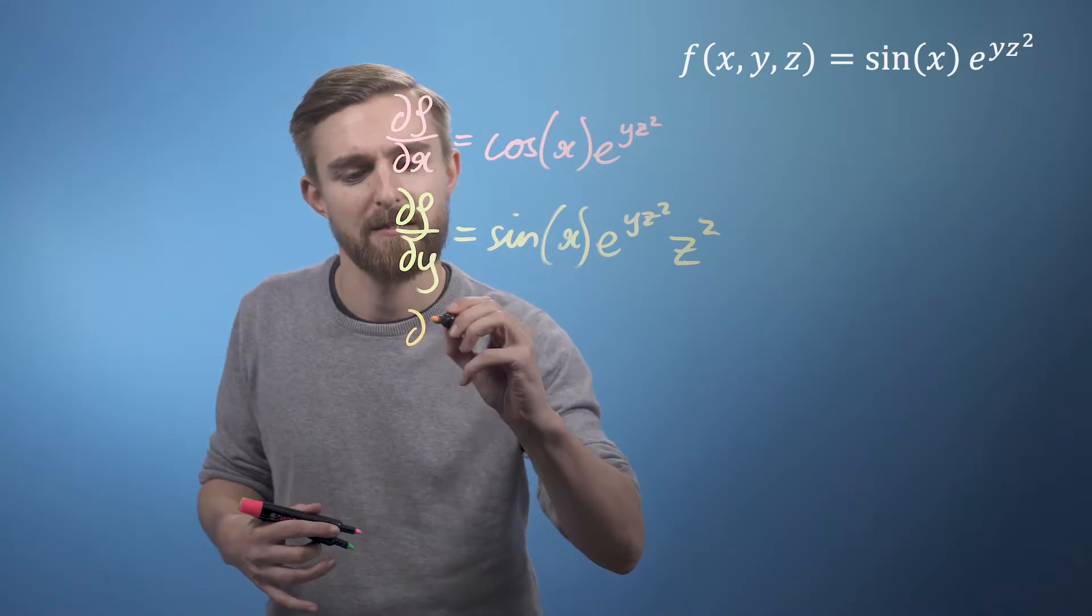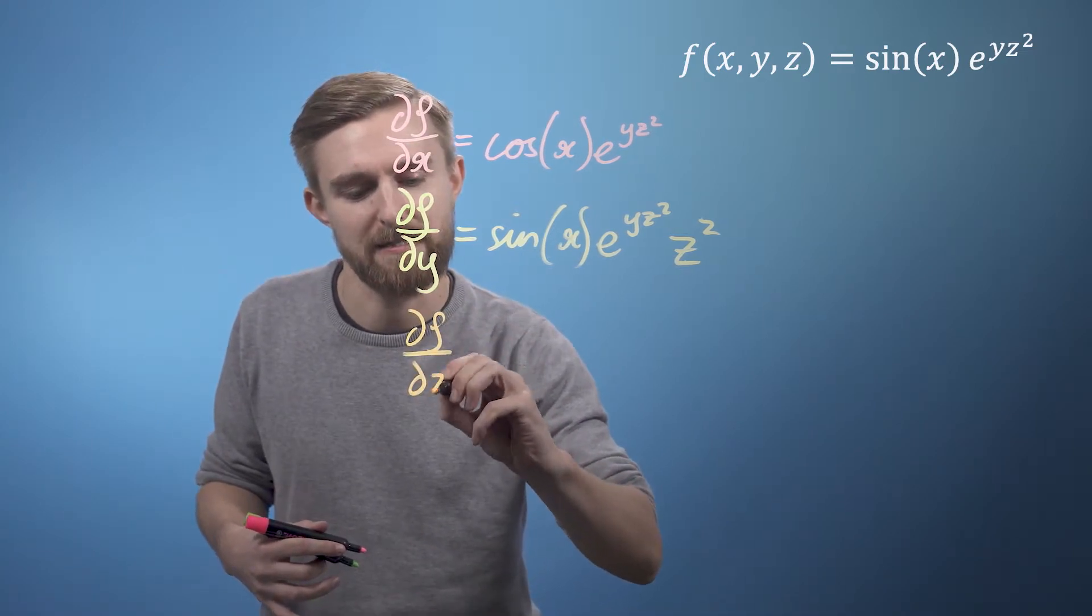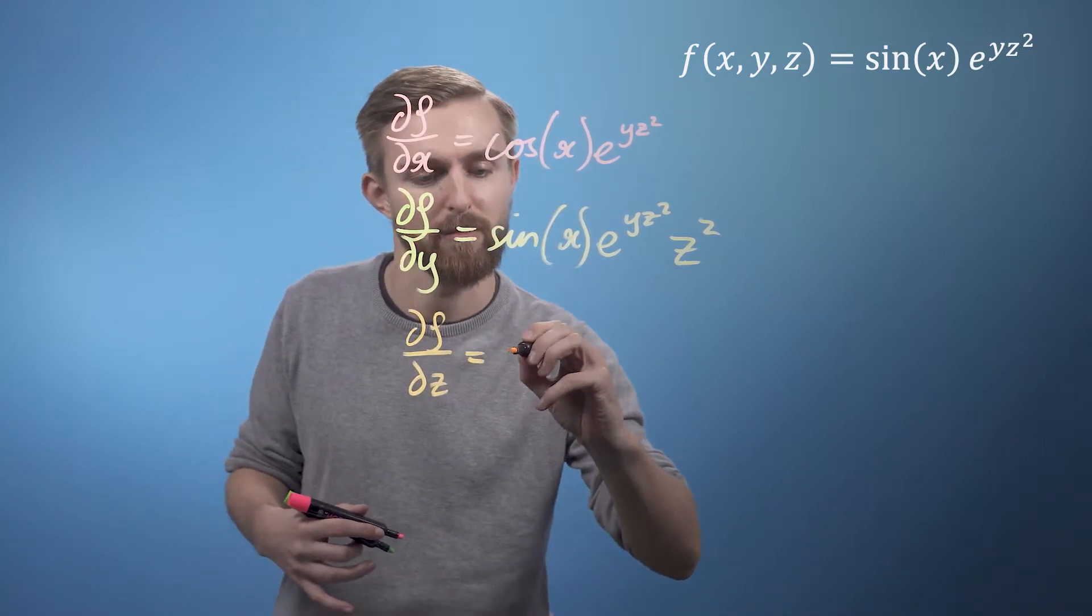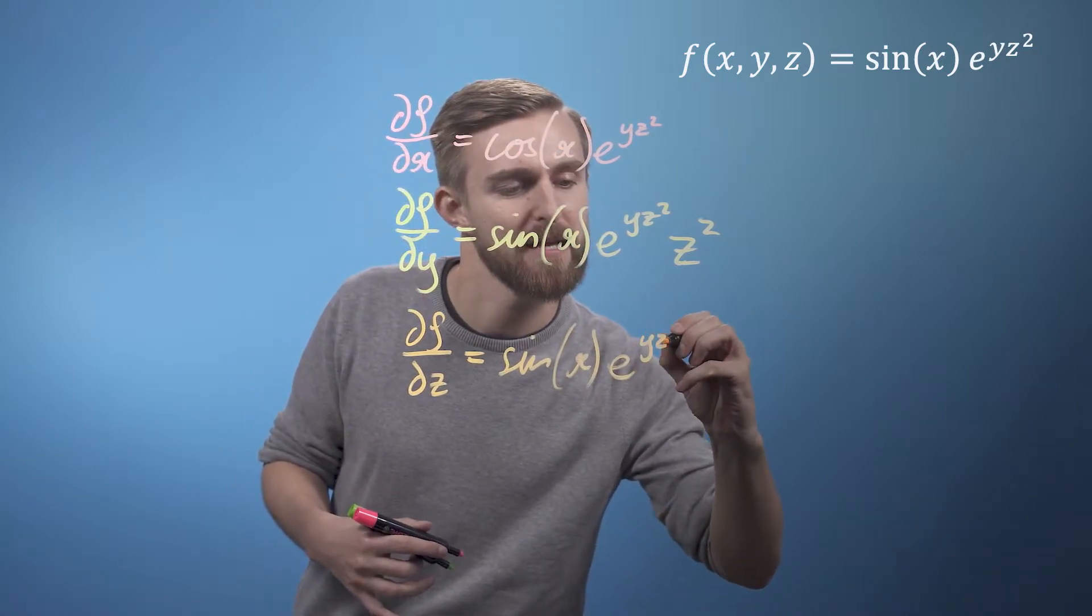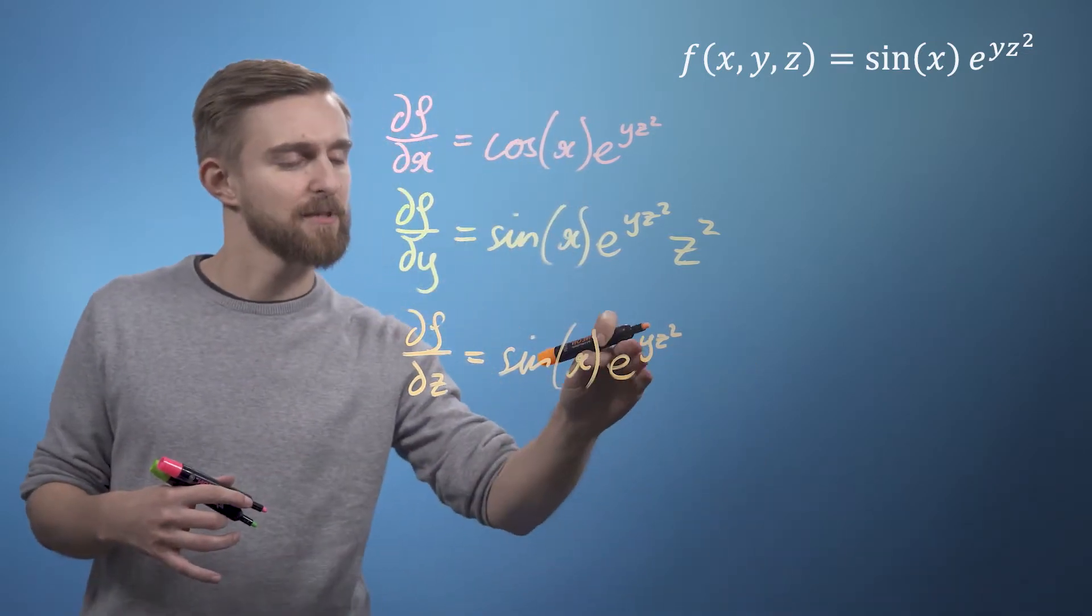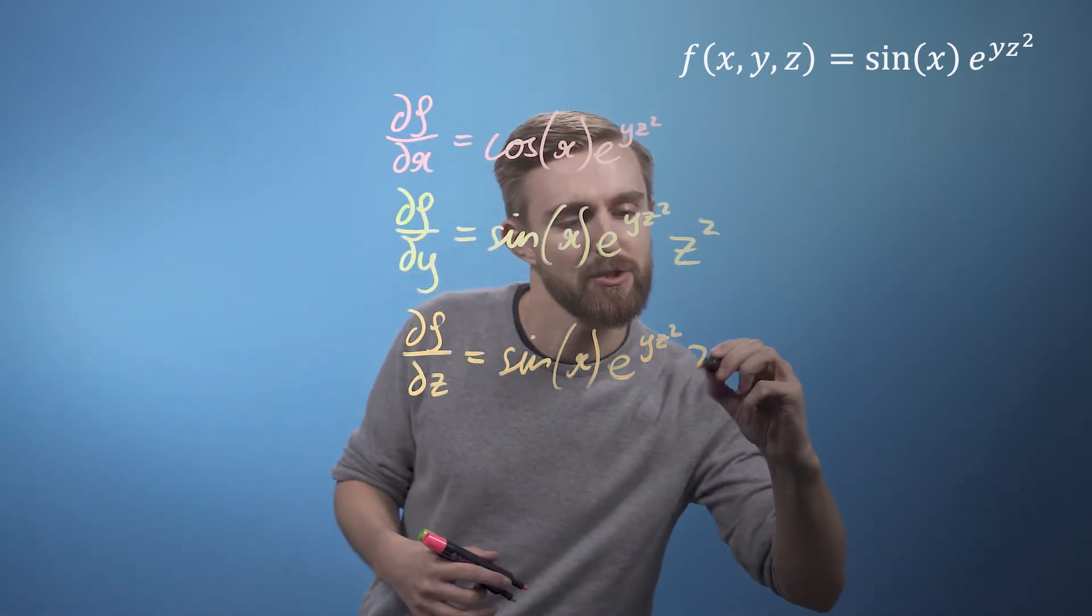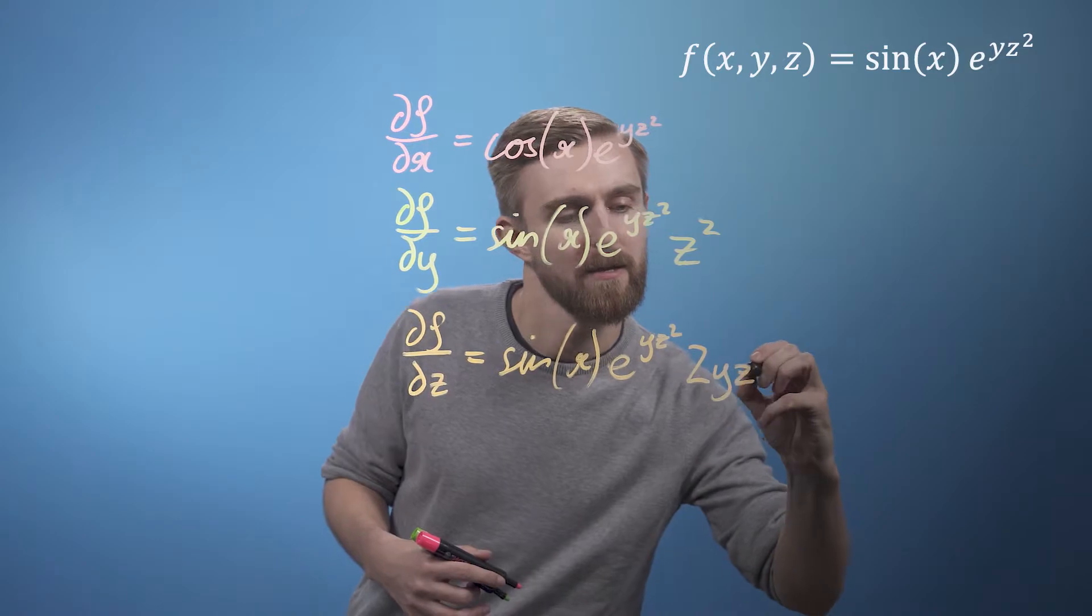So we just get df by dz is going to equal sine x, once again, e to the y z squared, and this time the derivative of this thing is 2y z.